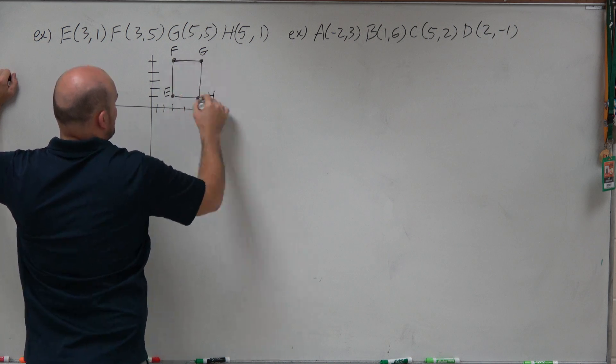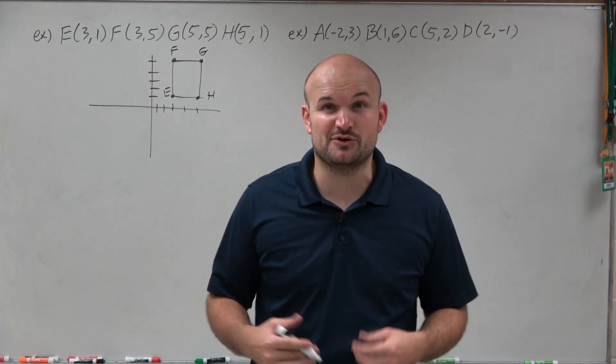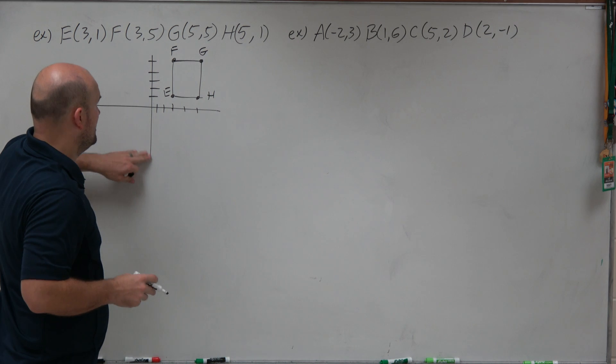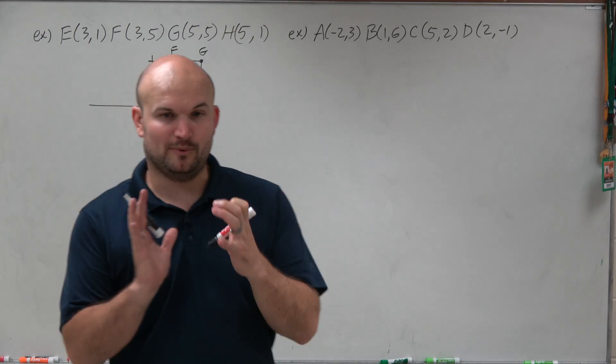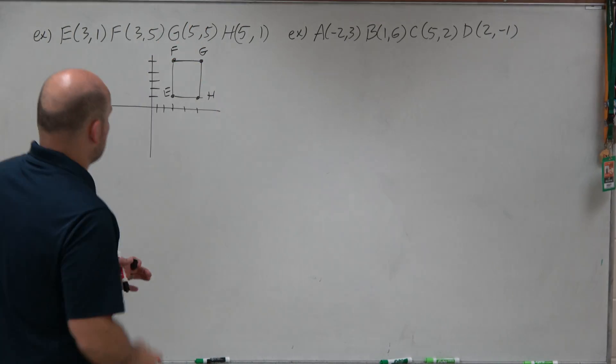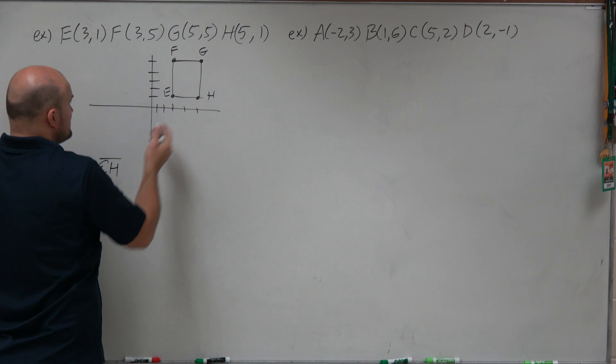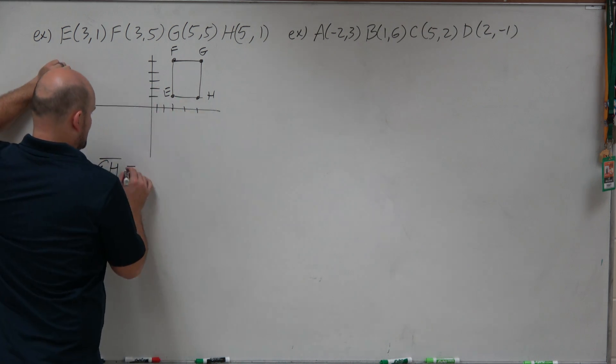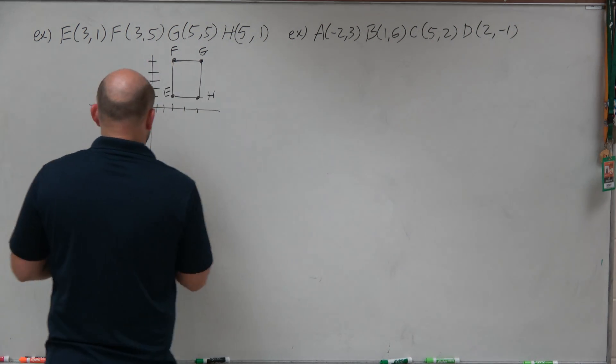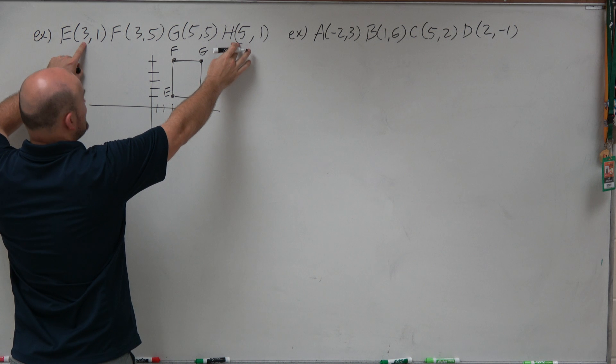You can see here, it does look like actually every single side is—it does look like it's a rectangle. Each side is going to be exactly the same. This one is pretty nice because to find the area, all I simply need to do is find the base and the height. We want to orientate it so the base is going to be flat, and the height is going to go directly to the top. We can call EH our base. We can count the difference on the base here—it's equal to two units.